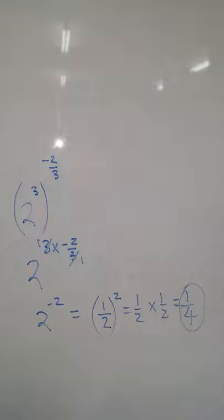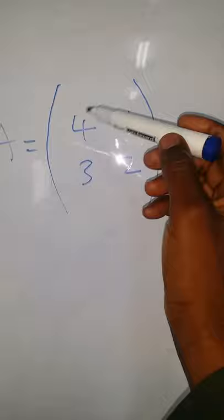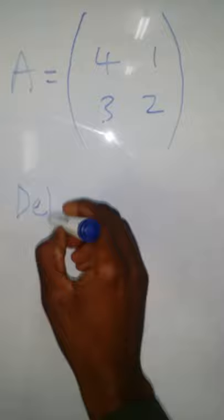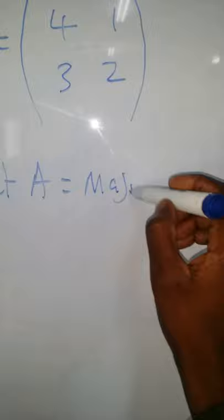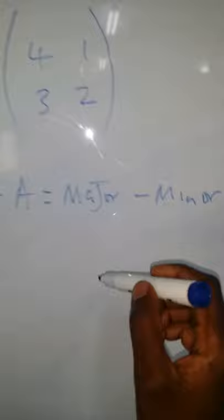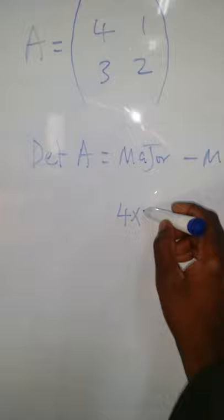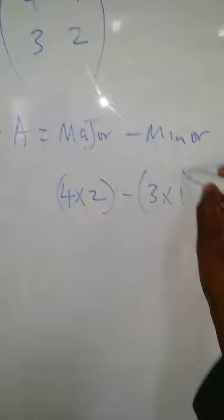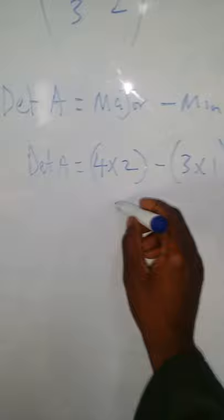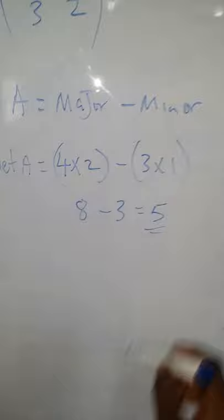When we have a matrix A with entries four, three, one, two — to find the determinant of A, take the major diagonal minus the minor diagonal. So you multiply four by two and take away three by one: that gives eight minus three, which equals five. Five is the determinant of A.